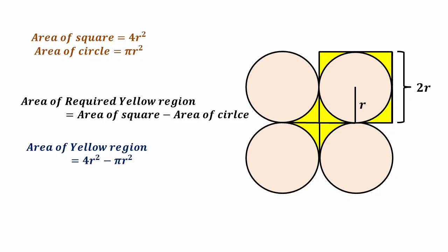Let's suppose r equals 2. Then, what will be the area of the required yellow region? We will just put r equals 2 here, and the answer is approximately 3.43. This is the required yellow region if we take r equals 2.